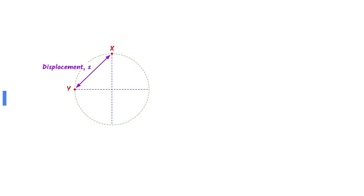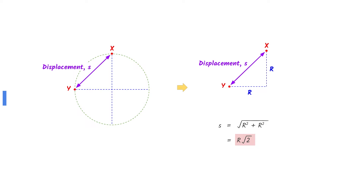Displacement is the shortest distance between two points. To find the magnitude of the displacement between x and y, use the Pythagoras theorem.